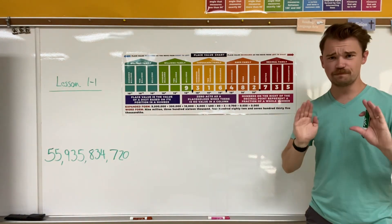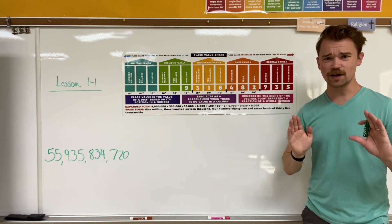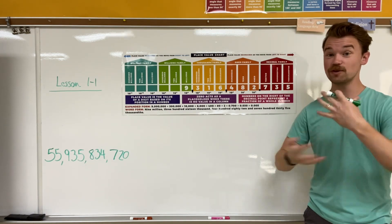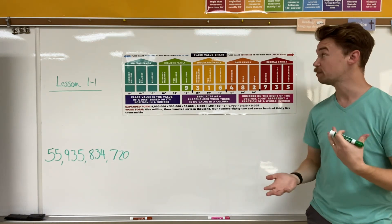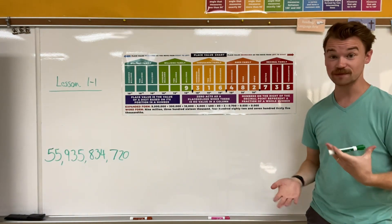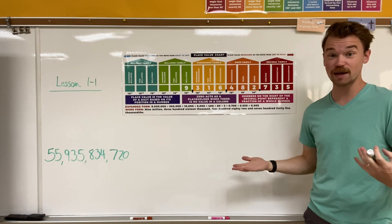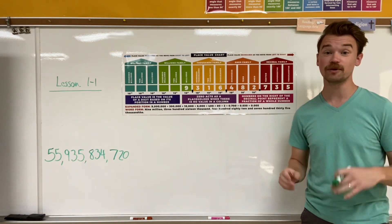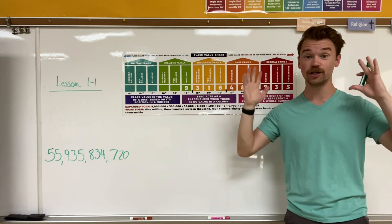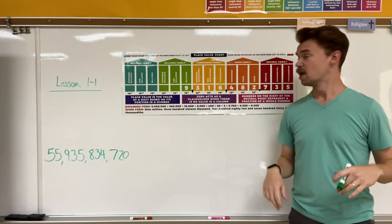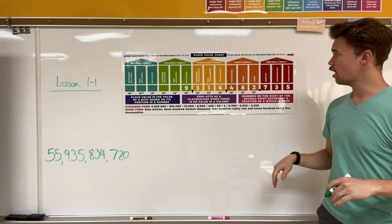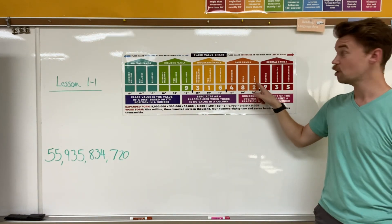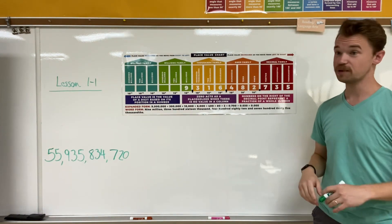It's been a while since we've talked about place value since last year, but we're going to review the concept of a place value chart. A place value chart basically shows us the place value of each individual number in a larger number. For example, we have this two — this two is in the ones place.